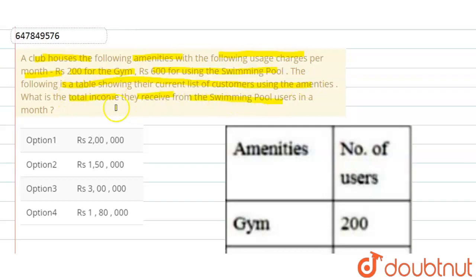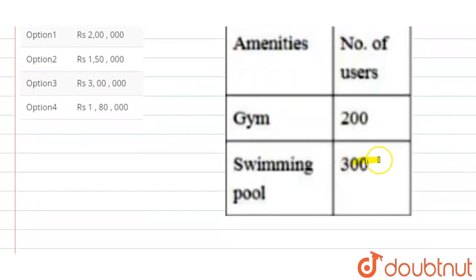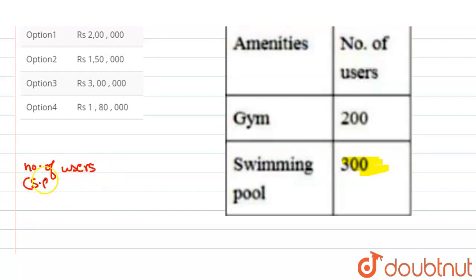The total income they receive from the swimming pool users in a month. Yaha pe swimming pool users kitne hai? Number of users swimming pool ke — yhe kitne hai humaray paas? 300.